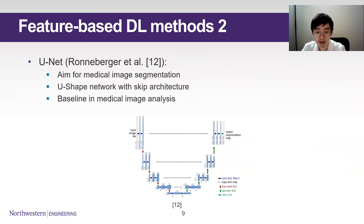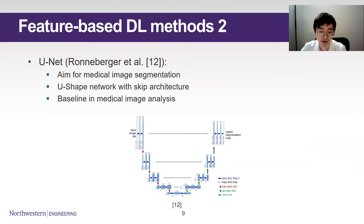UNET uses a very similar idea as FCN. It aims for medical image segmentation specifically. It introduces a more aggressive skip connection, which connects layers in a wider range. The connection layers are concatenated instead of summed, unlike in the FCN. It has become the most popular baseline method in medical fields.